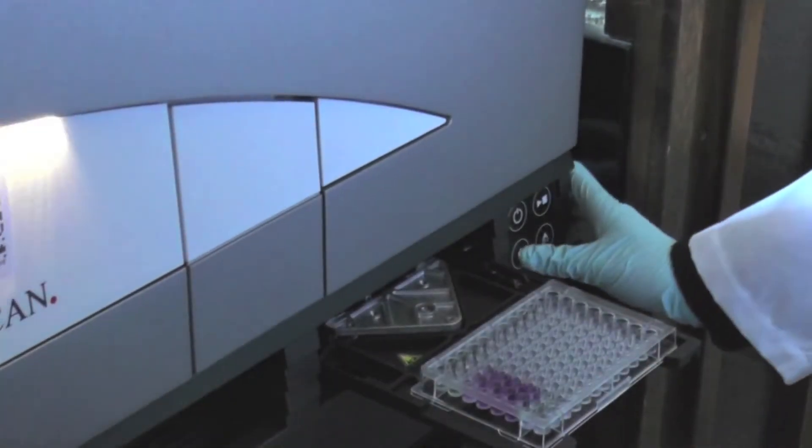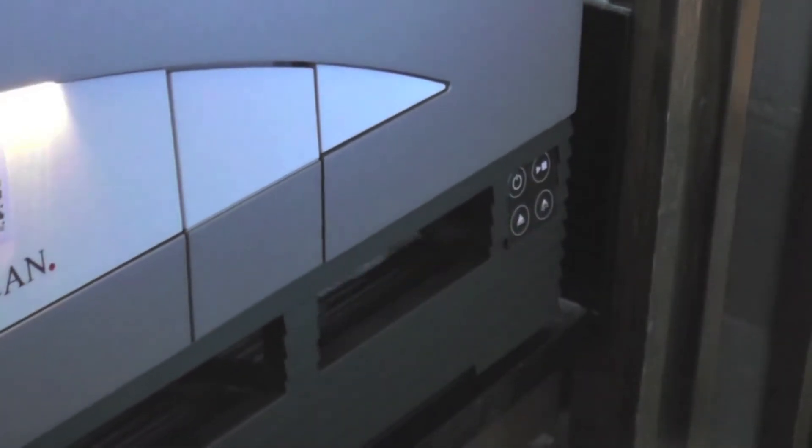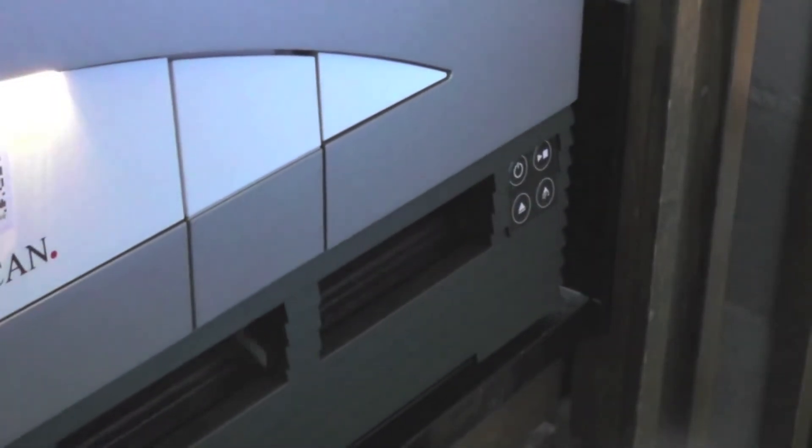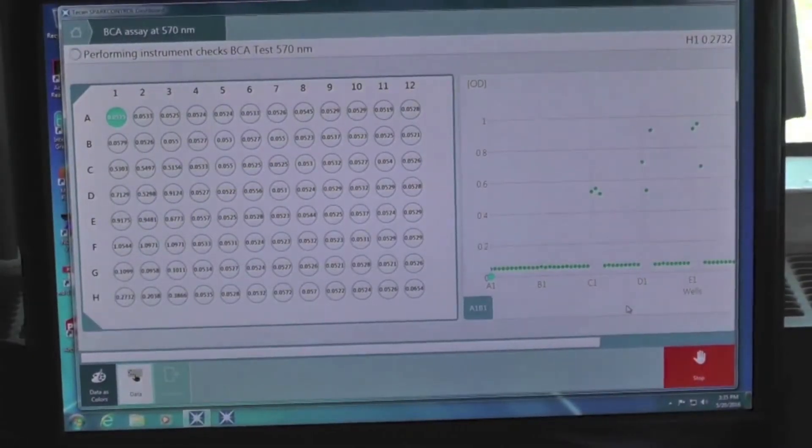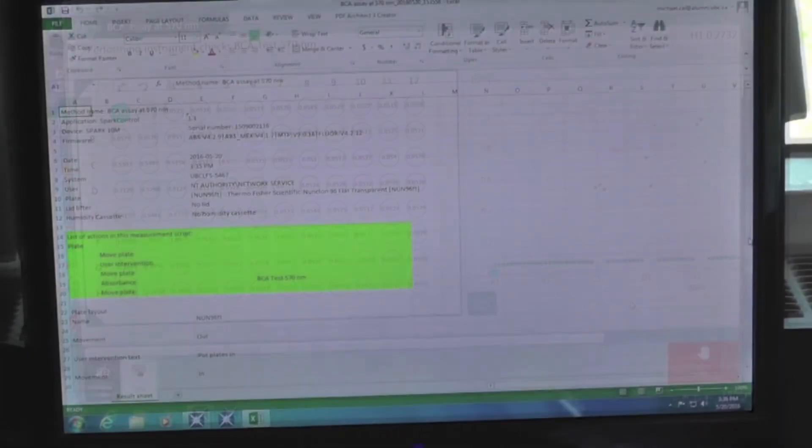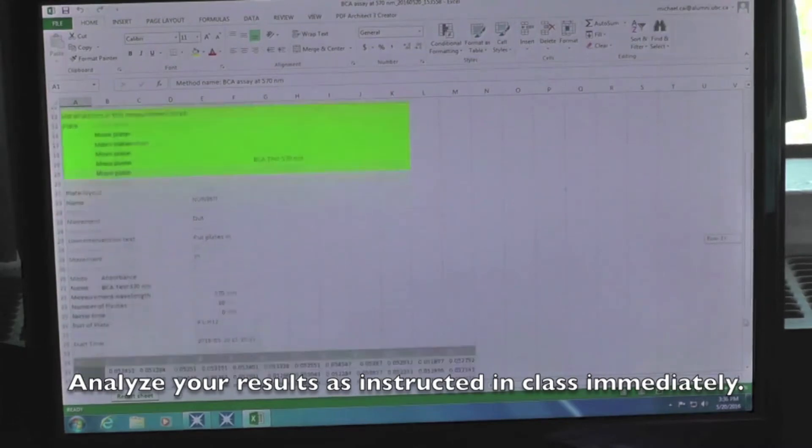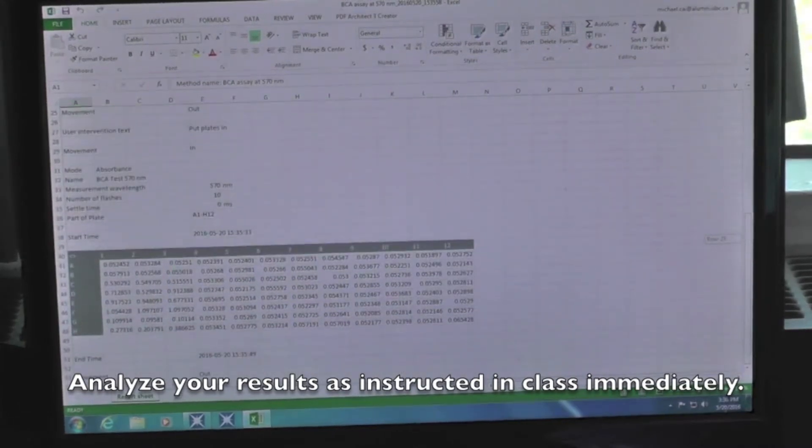Perform the BCA protein assay as outlined in session 4 and demonstrated in the BCA protein assay video. Read your plate with the tecan spectrophotometer. Analyze your results immediately with the computer to determine the protein concentration of your sample, then verify with your TA.